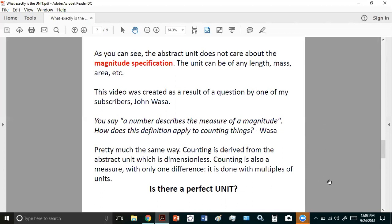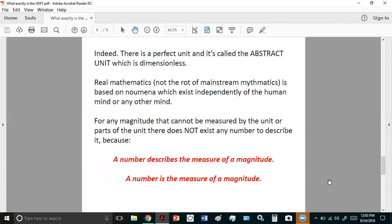Is there a perfect unit? Let's see, think about that. Hit the pause button here before you go to the next screen to the next slide. Yes, there is a perfect unit, and it's called the abstract unit. Real mathematics, not the rot of mainstream mathematics, is based on nomina, which exist independently of the human mind or any other mind. For any magnitude that cannot be measured by the unit or parts of the unit, there does not exist any number to describe it.